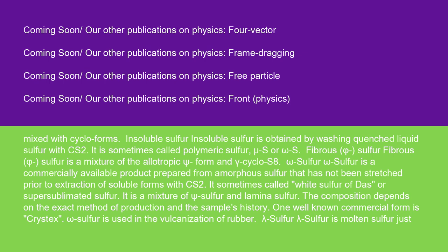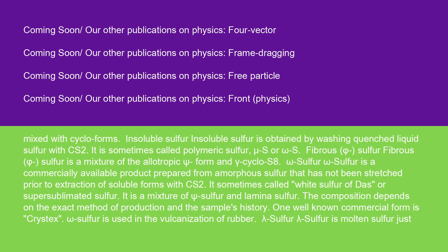Lambda-sulfur is molten sulfur just above the melting temperature. It is a mixture containing mostly cyclo-S8; cooling lambda-sulfur slowly gives predominantly beta-sulfur. Mu-sulfur is the name applied to solid insoluble sulfur and the melt prior to quenching. Pi-sulfur is a dark-colored liquid formed when lambda-sulfur is left to stay molten; it contains a mixture of SN rings. The term biradical catena S∞ chains is applied to biradical catena chains in sulfur melts or the chains in the solid.